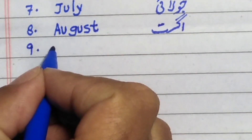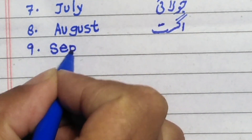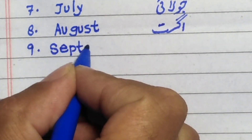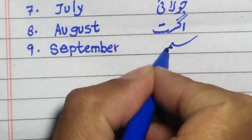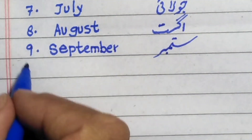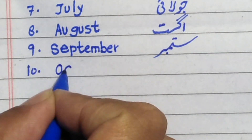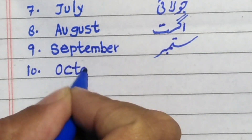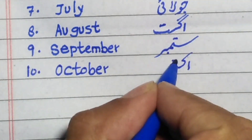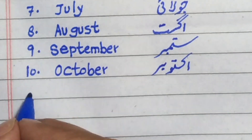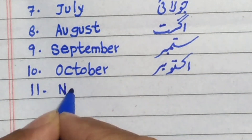Number nine is September. September. Number ten is October. Number eleven is November.